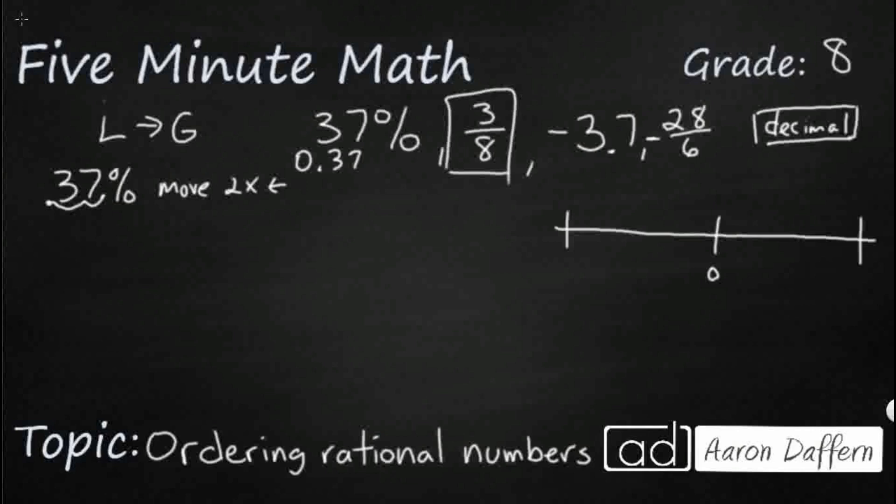So 3 eighths. You've got two different options here. You might already know how to easily change this into a decimal. If not, you can always divide. Divide your denominator into your numerator. You're going to have to divide several times here. There is a slightly easier way. I'll show you that in a second. So it's going to be 3.